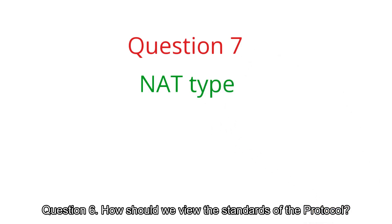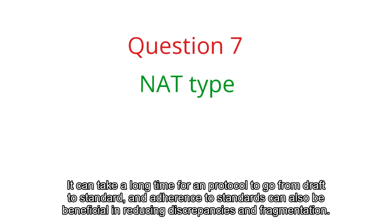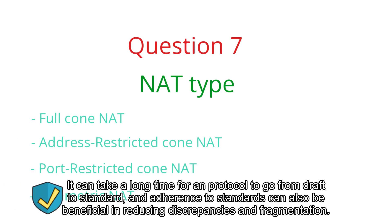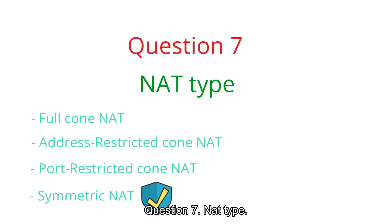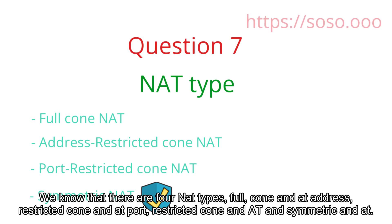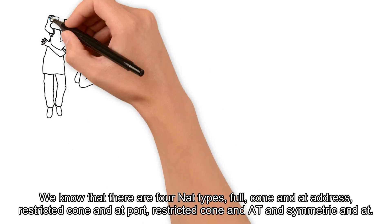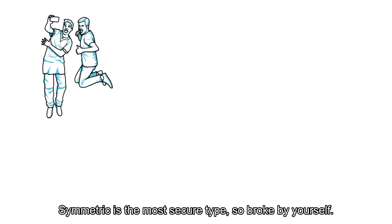Question 6: how should we view protocol standards? A protocol can take a long time to go from draft to standard, and adherence to standards can be beneficial in reducing discrepancies and fragmentation. Question 7: NAT type. When it comes to UDP proxying, NAT type is generally considered. There are four NAT types: full-cone NAT, address-restricted-cone NAT, port-restricted-cone NAT, and symmetric NAT. Symmetric is the most secure type.